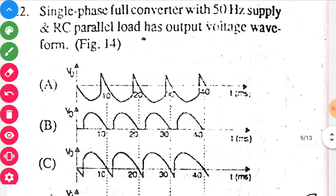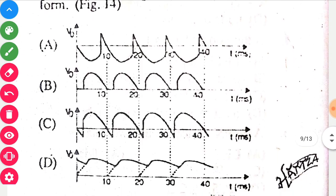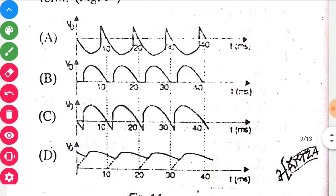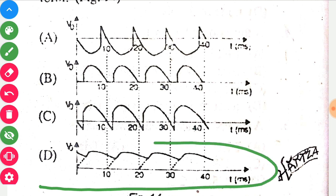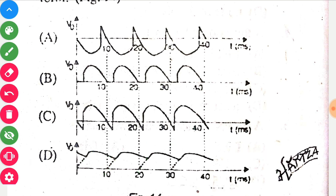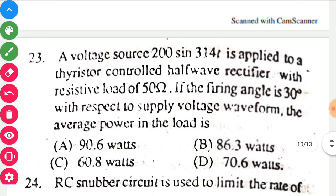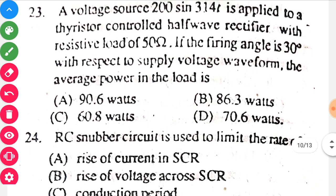Single phase full converter with 50 Hz supply and RC parallel load has an output voltage waveform — the correct option is D. You can guess that at first glance because figure D shows charging and discharging of a capacitor.